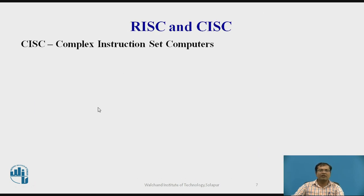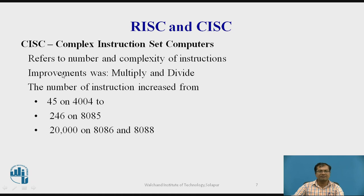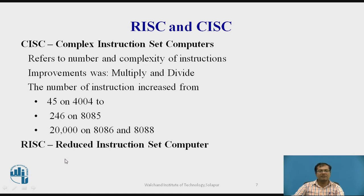Now we'll see more detail regarding the differences. CISC stands for Complex Instruction Set Computer; the 8086 supports CISC and refers to the complexity and number of instructions. The improvement was made with respect to the 8085, adding support for multiply and divide instructions. The number of instructions increased from 25 (in the 4004 processor) to 246 (in the 8085), and up to 20,000 in the 8086 and 8088. RISC stands for Reduced Instruction Set Computer; the 8085 falls under this category. It executes one instruction per clock cycle, since it does not support pipelining.